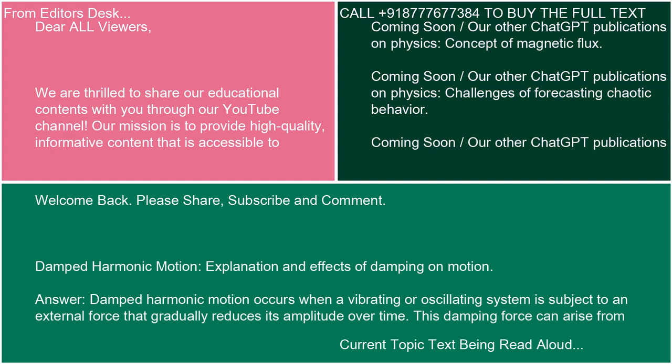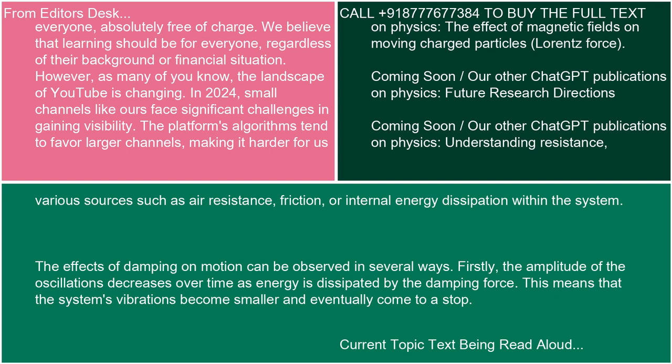Damped harmonic motion occurs when a vibrating or oscillating system is subject to an external force that gradually reduces its amplitude over time. This damping force can arise from various sources such as air resistance, friction, or internal energy dissipation within the system.